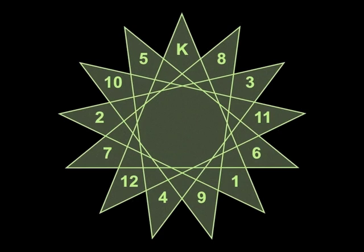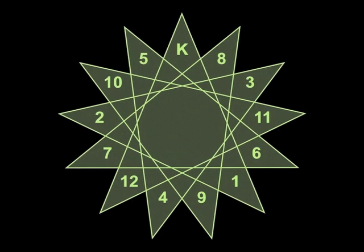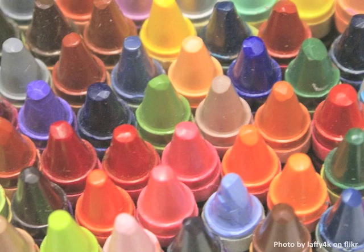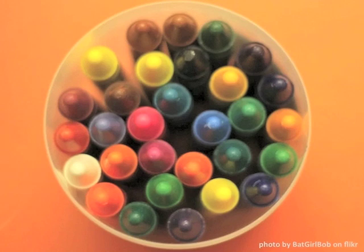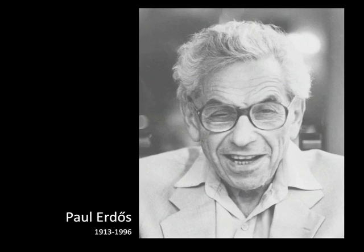Thirteen unsolved problems starting at kindergarten. What unsolved problem of mathematics could kindergarten students possibly understand? Whenever they're cleaning up, they're putting away blocks into boxes and paintbrushes into jars and crayons into cups. How many crayons can fit in this cup? That's not an easy question. In general, these packing problems are extremely difficult and unsolved. The one that we're going to look at is from 1975, and it's by Paul Erdős, the most published mathematician in history.